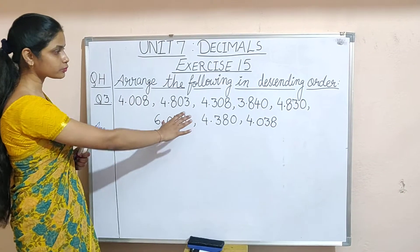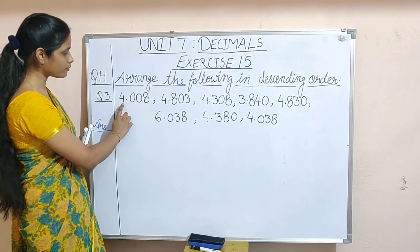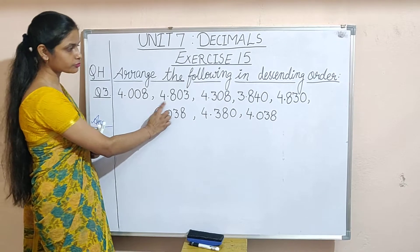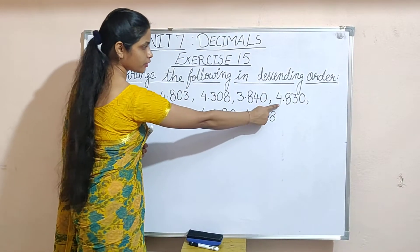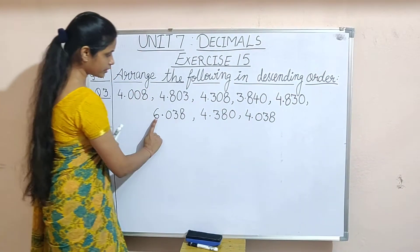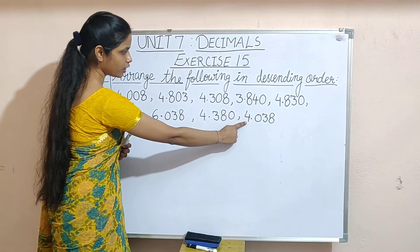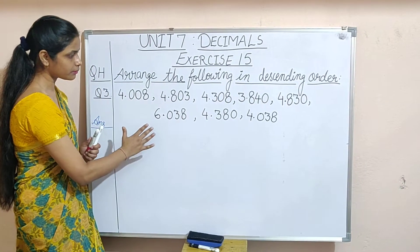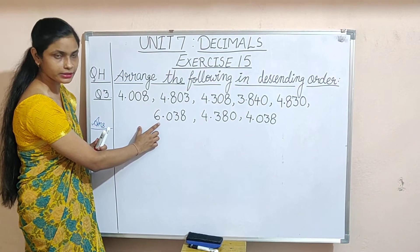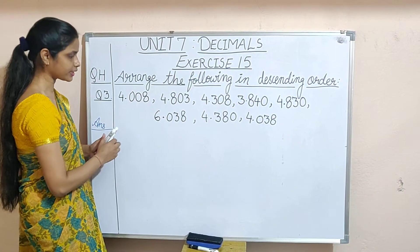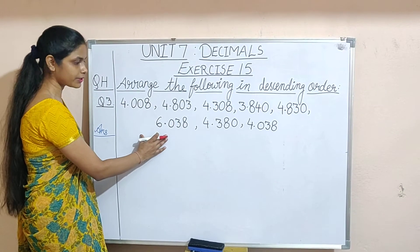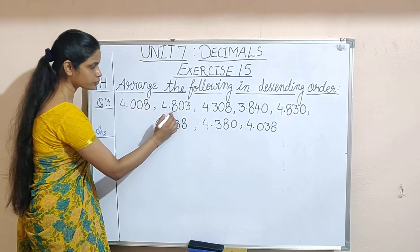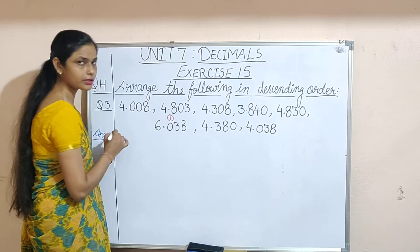In this question the whole number parts are: 4, 4, 4, 3, 4, 6, 4, and 4. Out of these numbers the biggest whole number part is 6. It means we have got the biggest number as 6.038, so this will be the first number.